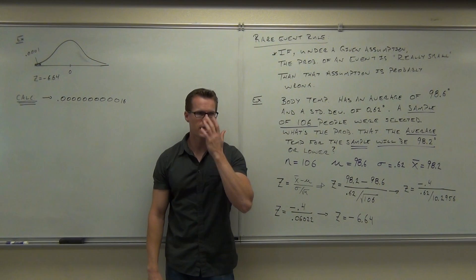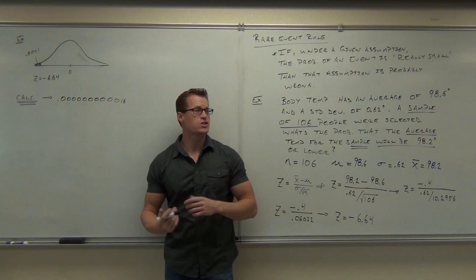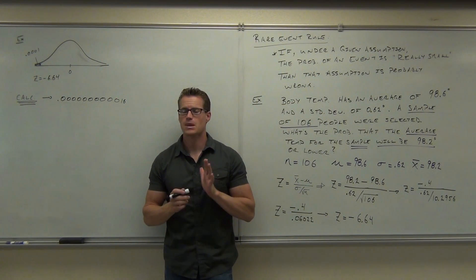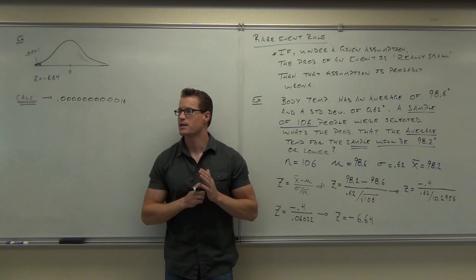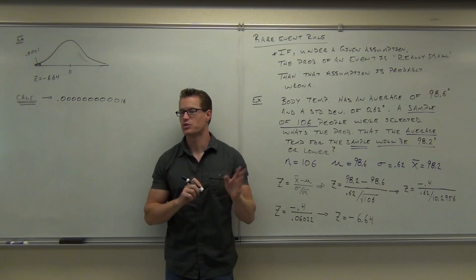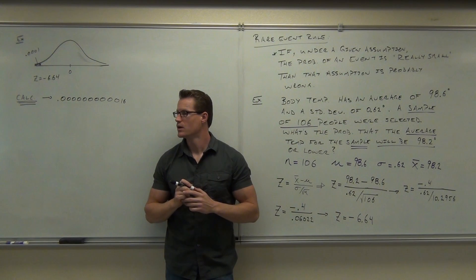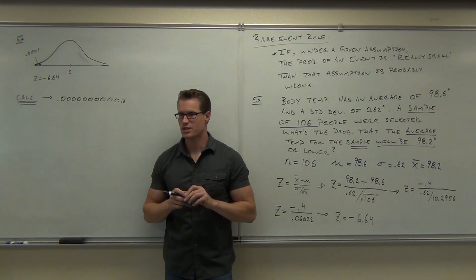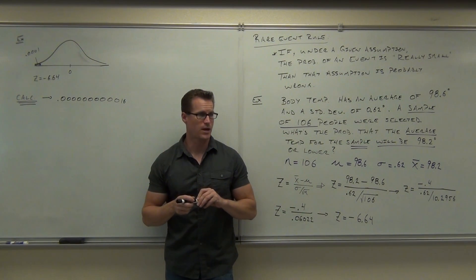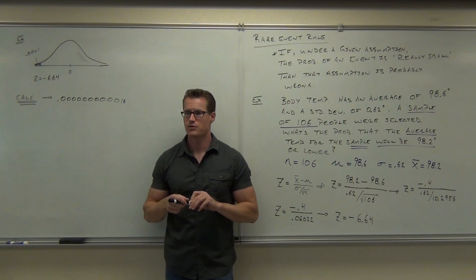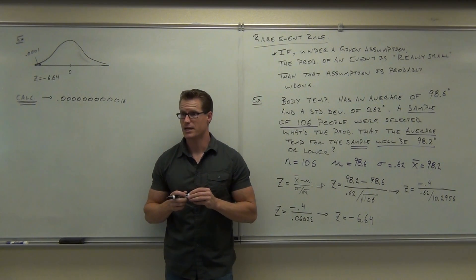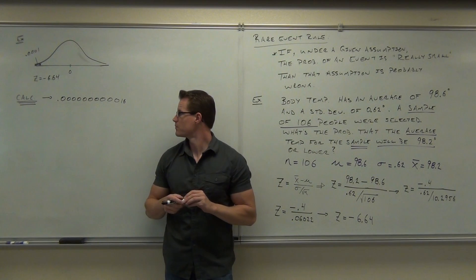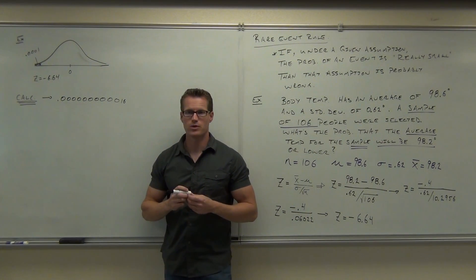So here's the point. If you went out there and said, I'm going to assume that the average temperature for people is 98.2, and you did this and you selected 106 randomly selected people, you found their average. The probability of you getting that average temperature of 98.2 or lower is that.